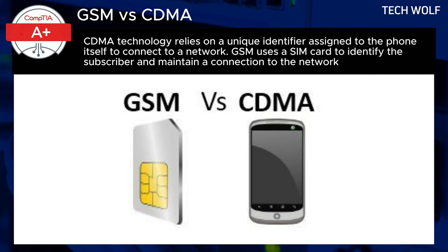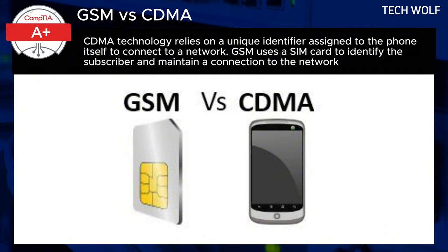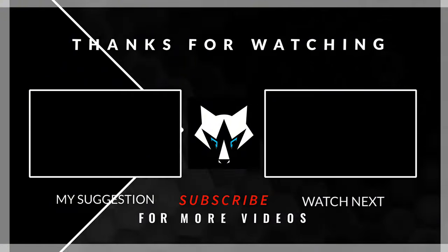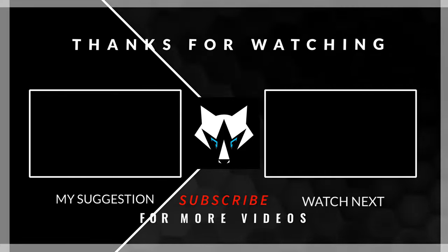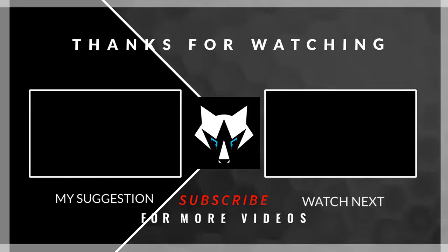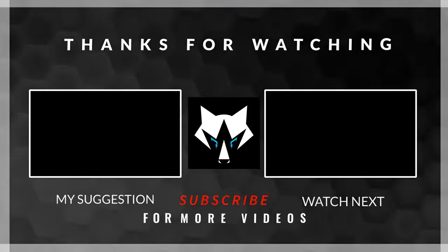As you prepare for the CompTIA A+ Core 1 certification exam, it's important to remember the key differences between these two technologies. GSM is known for its flexibility, as the use of SIM cards enables easy switching between devices and facilitates international roaming. CDMA, meanwhile, is recognized for its strong network stability and wide coverage, especially beneficial in rural areas, though changing devices can be more complicated.